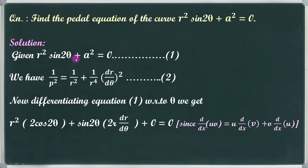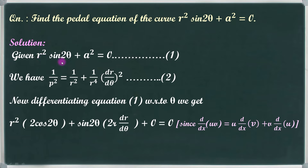We differentiate the first term r squared into sin 2θ — this is a product. We use the product rule formula: d/dx of (u·v) equals u·(dv/dx) plus v·(du/dx). So, differentiating the first term: r squared is u and sin 2θ is v.